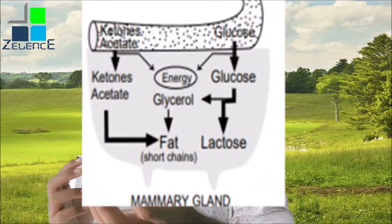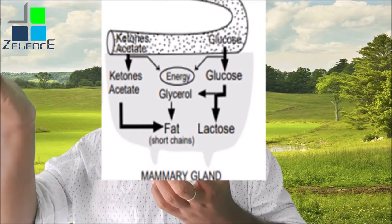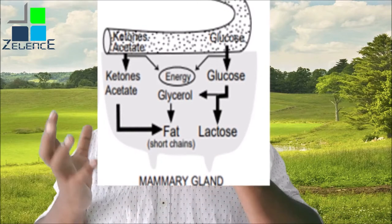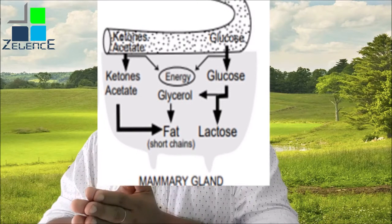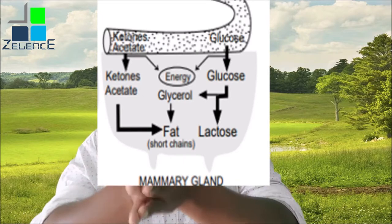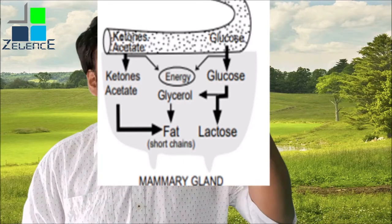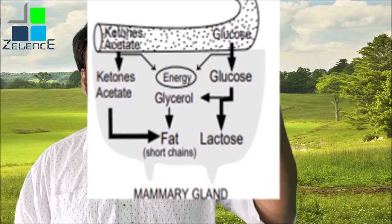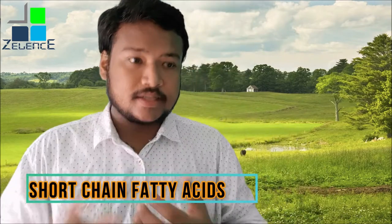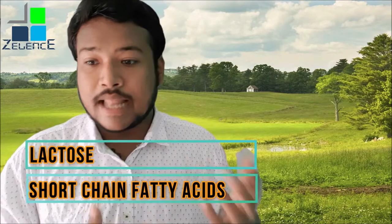The glycerol stays inside the mammary glands, and ketones and acetate convert into short-chain fatty acids. These glycerol and fatty acids combine to form short-chain fatty acids, which are very important components of milk fat. The remaining glucose converts into lactose, which has a high content in milk. So from carbohydrate metabolism, two key things are formed: glycerol plus fat forming short-chain fatty acids, and lactose.